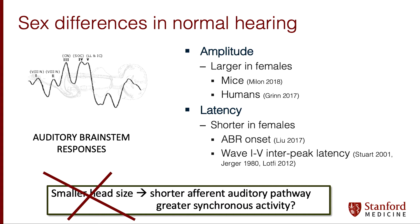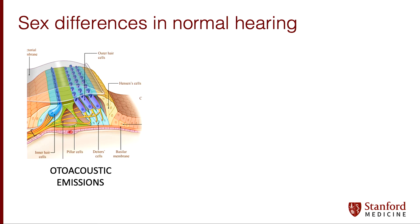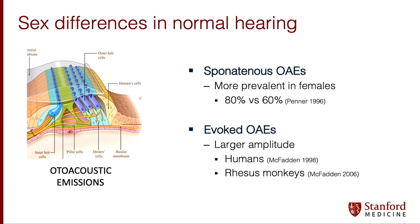Otoacoustic emissions are another objective way we examine the hearing system. These are tonal sounds generated by the cochlea that travel in reverse — from the cochlea back through the middle ear and out the eardrum — and can be measured with sensitive microphones placed in the ear canal. We can measure spontaneous otoacoustic emissions and evoked otoacoustic emissions in response to a sound stimulus. In both cases, otoacoustic emissions are stronger in females, which is very reproducible in humans and other mammals.